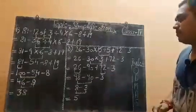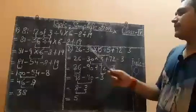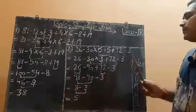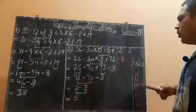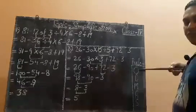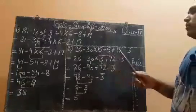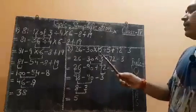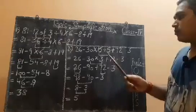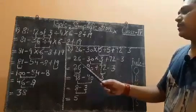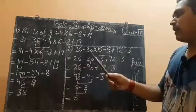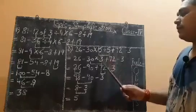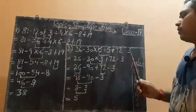Just see one more question — the second one — so it will be more clear to you. 26 minus 30 multiply by 15 divided by 5 plus 72 minus 3. According to the rule, we have to solve 'of' first, but in this question 'of' is not given. So we will solve division. The division part is 15 divided by 5, which equals 3. So the expression becomes: 26 minus 30 multiply by 3 plus 72 minus 3.